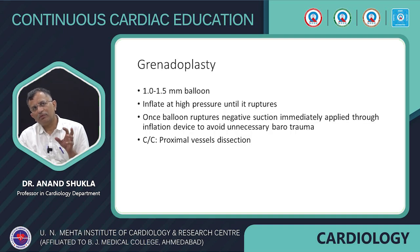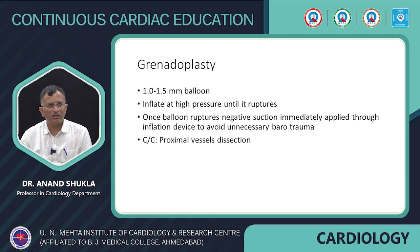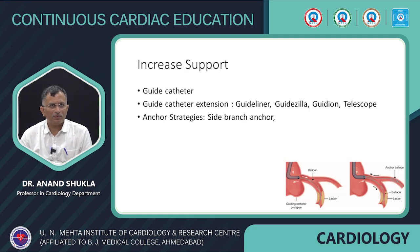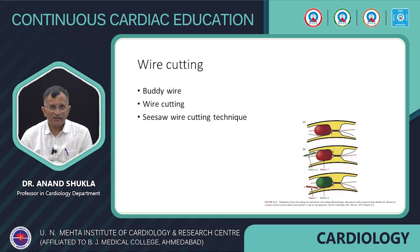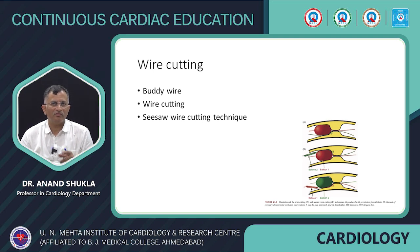Granitoplasty involves a 1.0–1.5 mm balloon inflated to high pressure within the lesion until rupture. Once ruptured, immediately apply negative suction to avoid barotrauma. Other options include increased support wire, guide extension, anchoring technique, Tornus, or Turnpike spiral microcatheter. For the SISO movement, two wires are passed and kept proximal to the lesion; two balloons are inflated alternately — one inflated, one deflated — creating a wire-cutting effect, known as the SISO wire cutting technique. For truly uncrossable lesions, atherectomy, orbital atherectomy, laser, or subintimal crossing may be required.